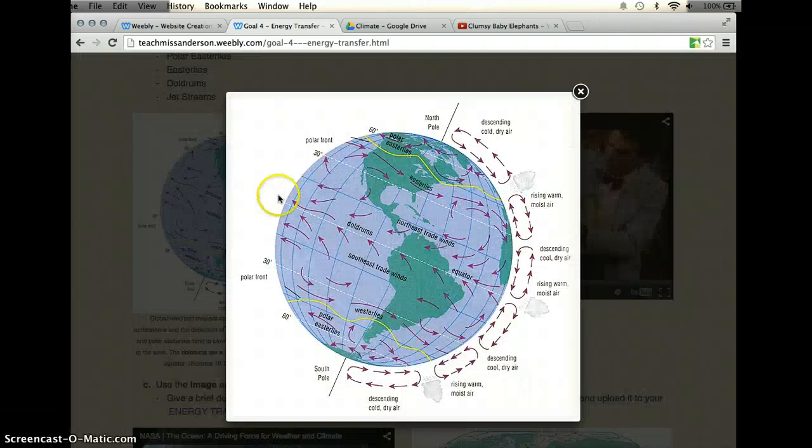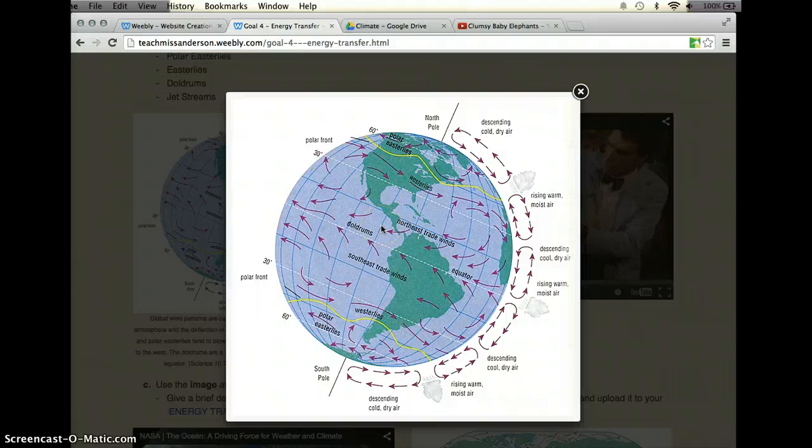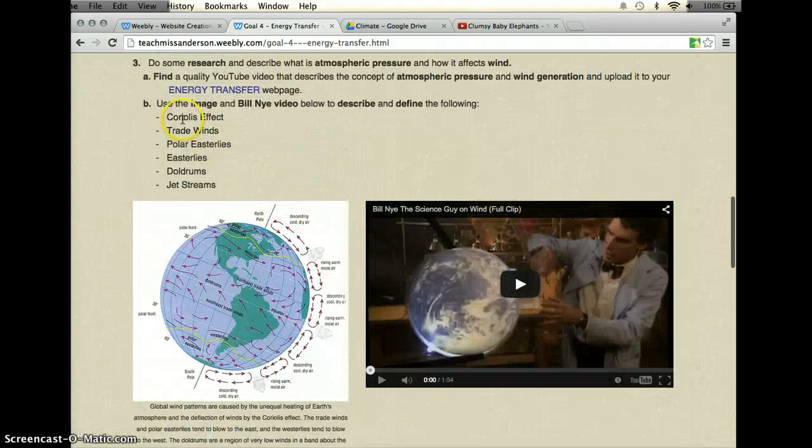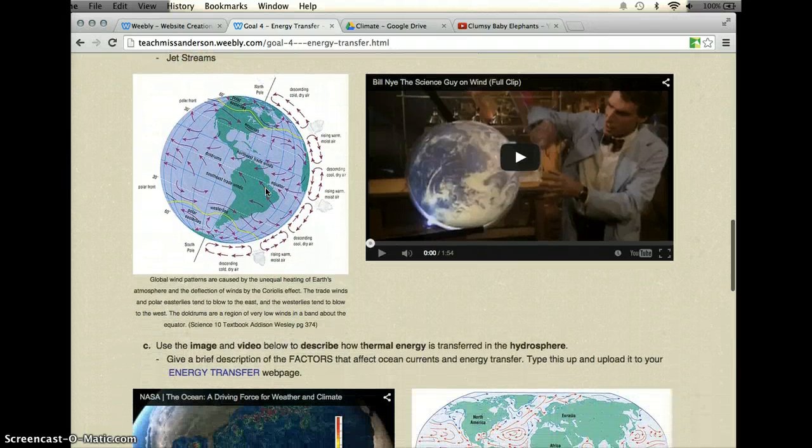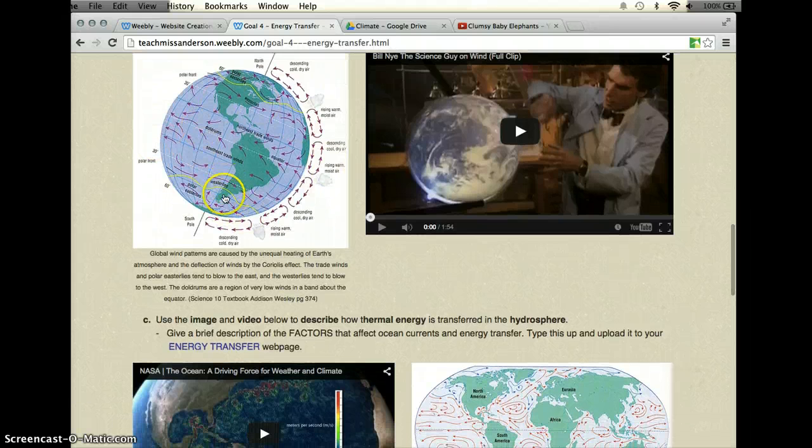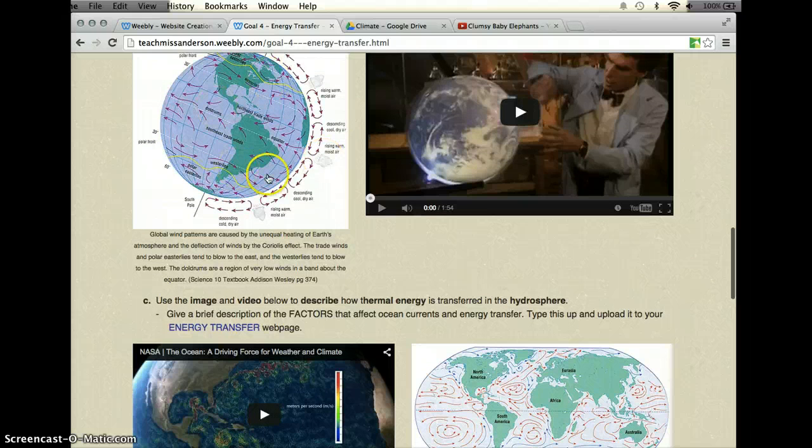What you're going to do is you're going to click on the image. It should pop up with a larger image as you click on it to get a more clear image of what you're trying to describe here. Just look at the direction of the air flow and here you'll see descending cold, dry air and how that affects maybe that region of the earth. See if you can dissect what is happening in these wind streams and also use Google to help you define and describe these terms. This image is also found in your textbook on page 374 so you can take a look at it there.